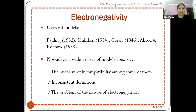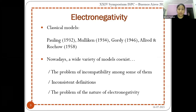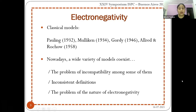Beginning from Pauling, the next model was given by Mulliken in 1934, followed by Gaudi in 1946, and then Allred and Rochow in 1958. There are more than 200 electronegativity scales and models until now. However, the problem is that they are incompatible with each other. Pauling is an extrinsic scale based on the covalent bond approach, while Mulliken is an intrinsic scale based on atomic structure. Their units also differ — some scales use an energy concept, others a force concept, such as Allred and Rochow's scale.